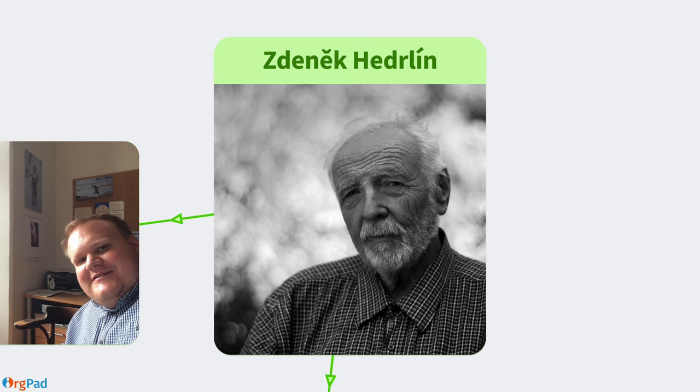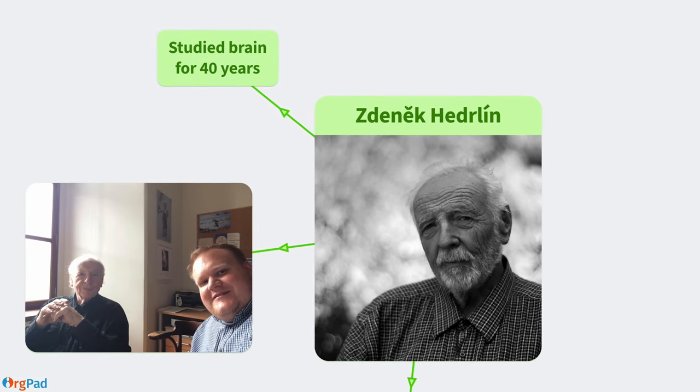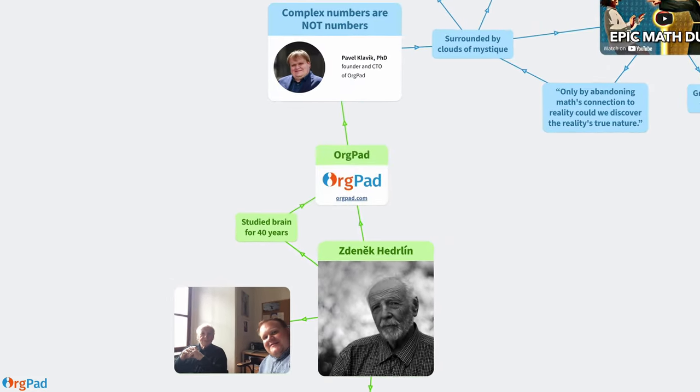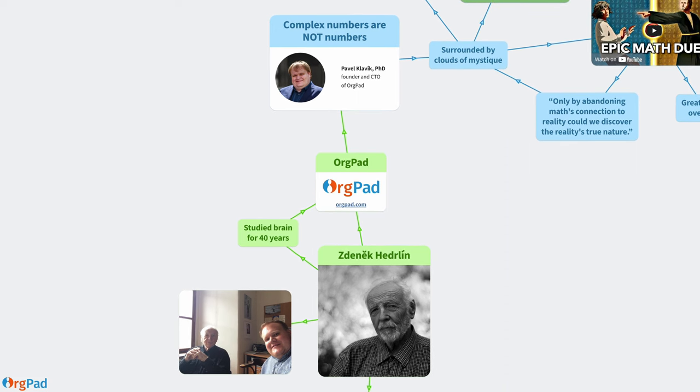He spent the last 40 years of his life studying brain, how to model it with mathematics, and how to use computers to better understand it. He died in spring 2018, and shortly before I promised to him that I will turn his idea into a tool which can help a lot of people. With my friends, we have spent the last 5 years realizing Hedrlín's vision by building this application called OrgPad.